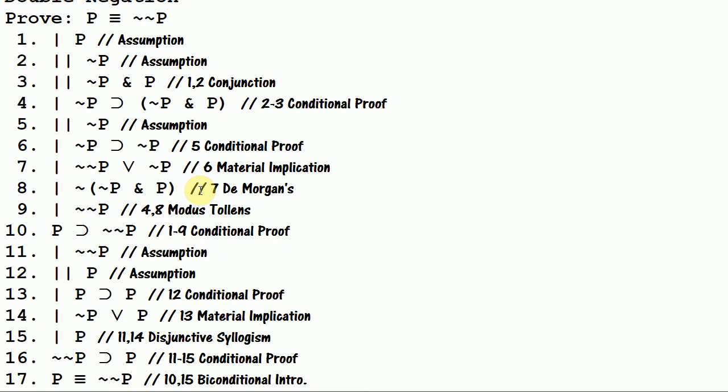But we can't use this method for material implication or for De Morgan's because we make use of these two rules to use this method. But what this method illustrates is the idea of indirect proof. And in indirect proof, instead of showing the consequent of a conditional, we show a contradiction, and then we can conclude that what we assumed is not true.